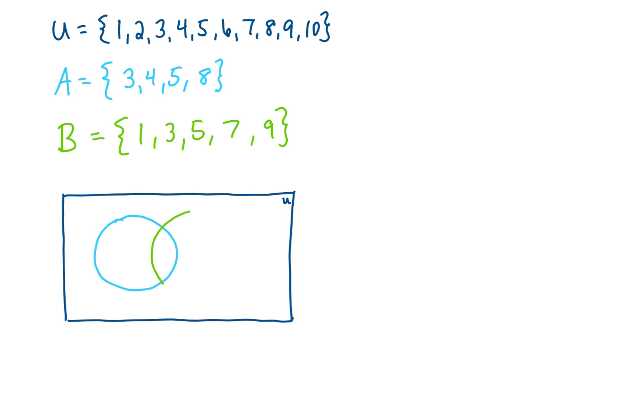We have a set A, and we have a set B, and there is some overlap between those two sets. The overlap between these two sets is the elements 3 and 5. Also in set A are the elements 4 and 8. And in set B, but not in set A, are the elements 1, 7, and 9.